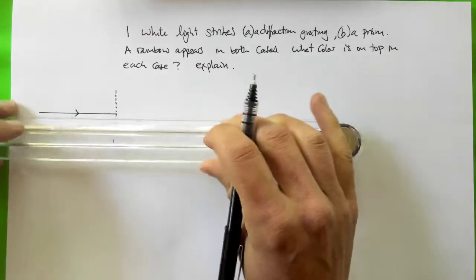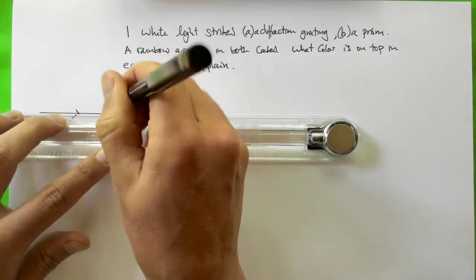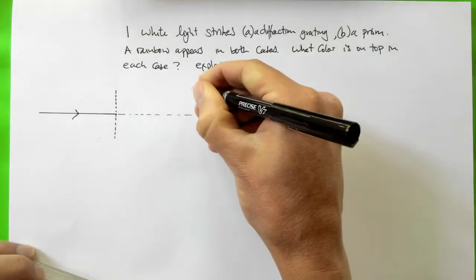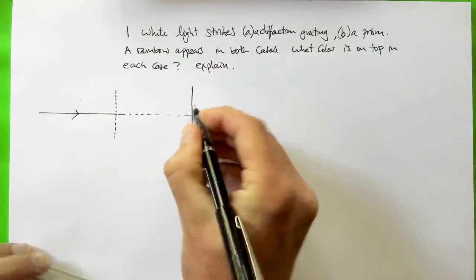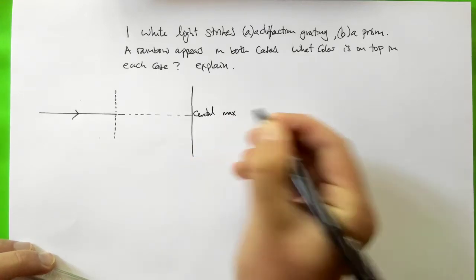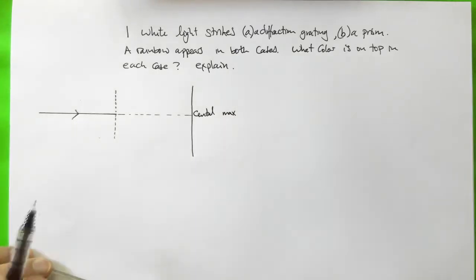Now the light that passes through a diffraction grating, some of it forms a spot, goes straight through and forms a spot on a screen. So that's the central maximum. And that light will just be white if this is white light striking here.